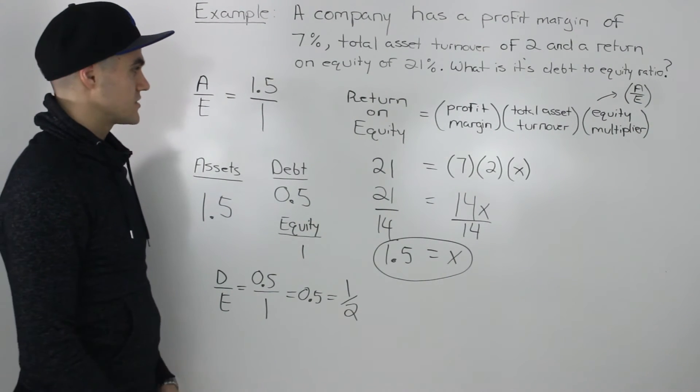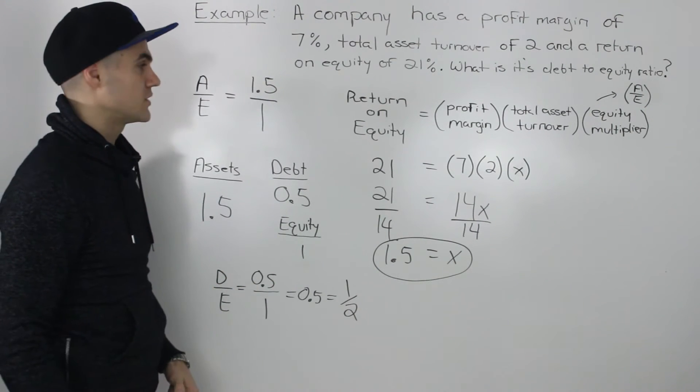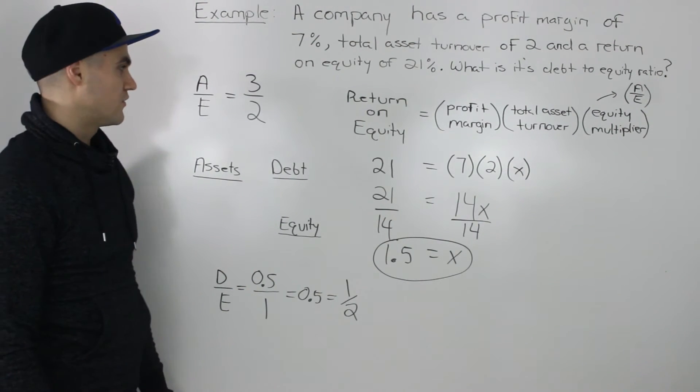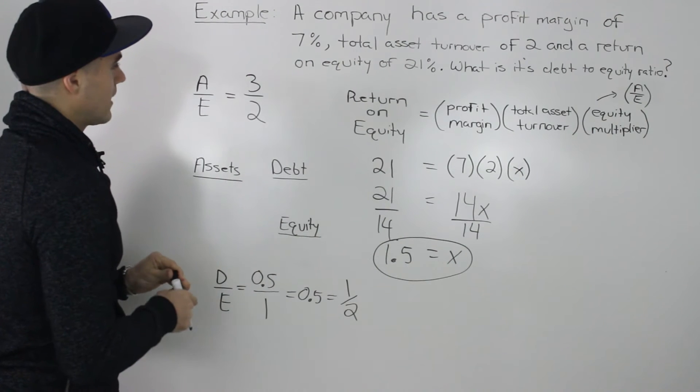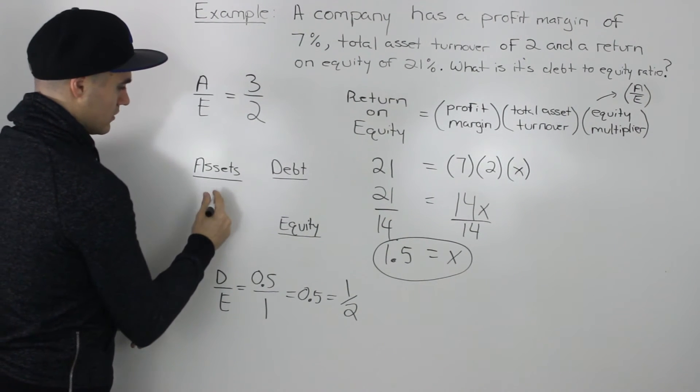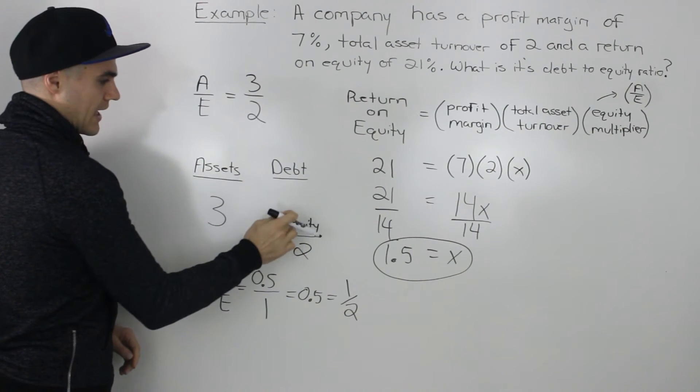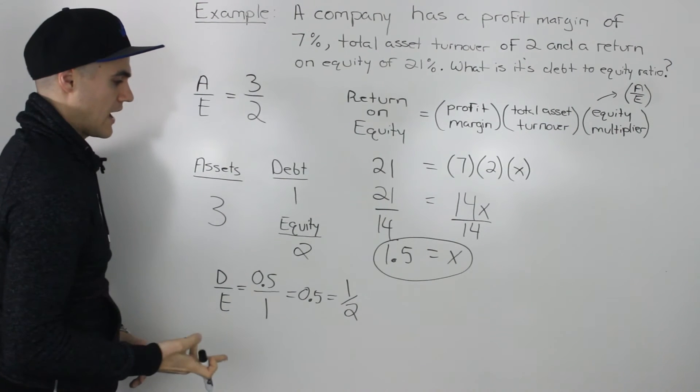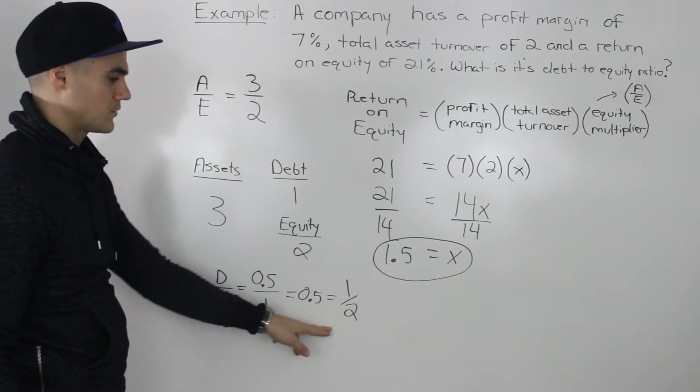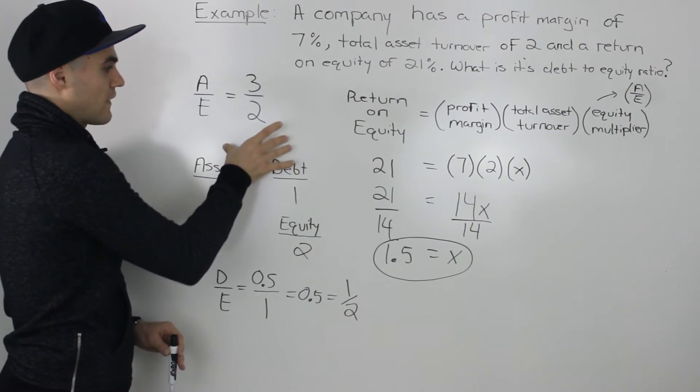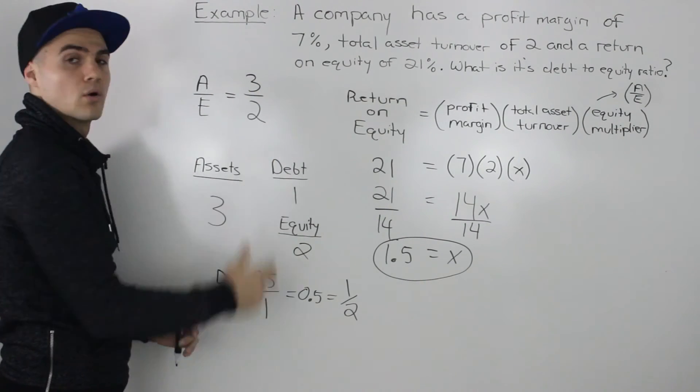Now, we could have also got the same answer if we had the 1.5 instead represented as a nice fraction with no decimals. So instead of 1.5, let's say that we wrote 3 over 2, which is the same thing. Now notice how the assets in the numerator are 3, equity is 2. So that means that our debt has to be 1, because debt plus equity has to equal the assets. And now notice how the debt to equity ratio is just 1 over 2, which is what we got anyway. So whether you are given a fraction or a decimal, the only thing you've got to remember is when you're given the decimal, put it over 1.